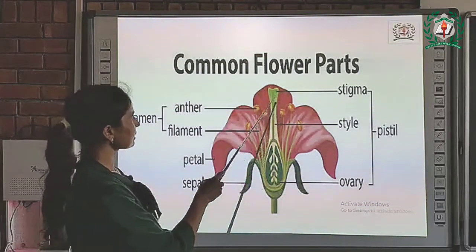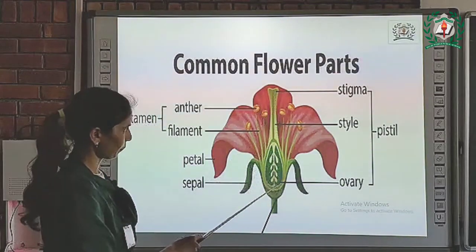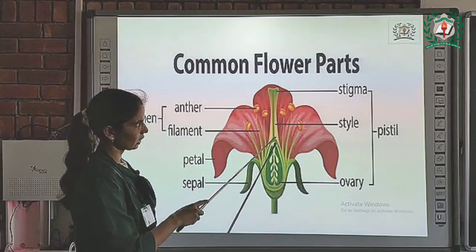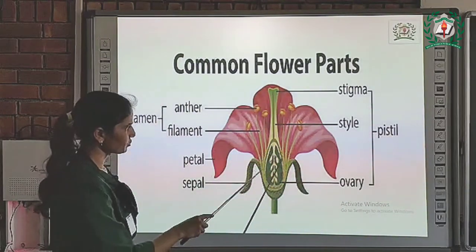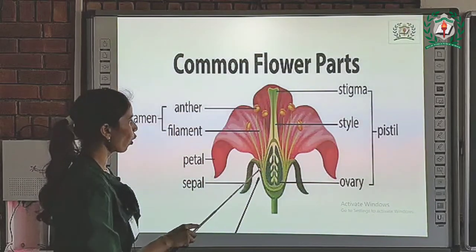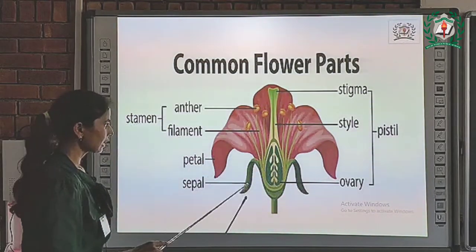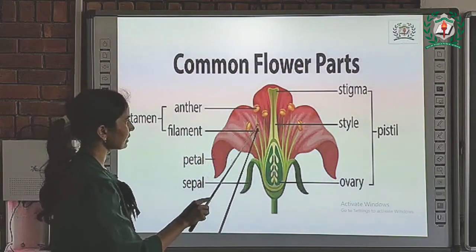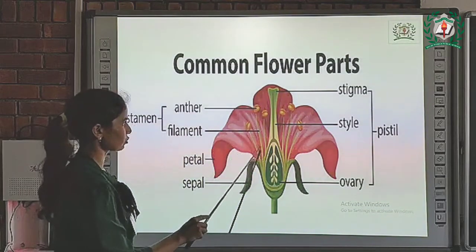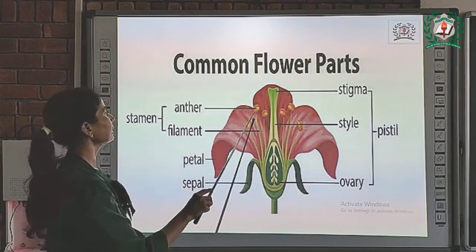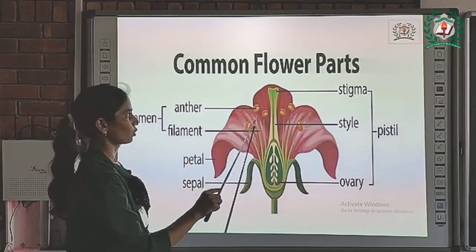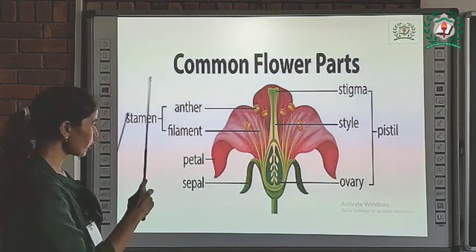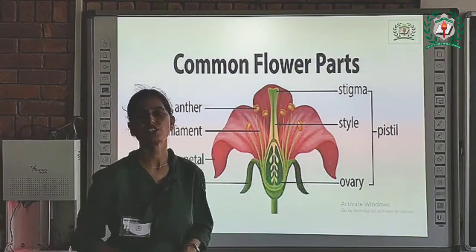This part is known as stigma. This part is known as the style. And this oval-shaped part is known as ovary. These are petals. These green parts are sepals. These fibrous structures are called filaments. And these yellow parts are known as the anther. These are some inner parts of flowers.